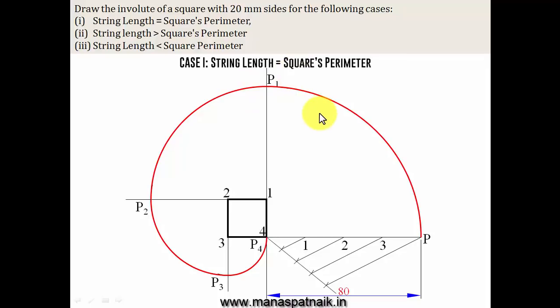In case 2, we'll see this, string length more than the square's perimeter. Now, we know very well that the square's perimeter is how much? It's 80. So, obviously, the string length is going to be more. How much is it going to be? Let me write this, 88 millimeters. So, obviously, it is more than the square's perimeter.